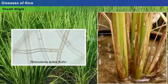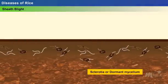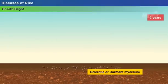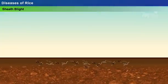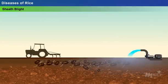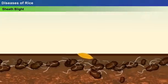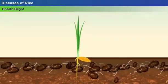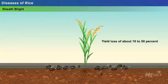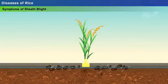Sheath blight is caused by the fungus Rhizoctonia solani. This fungus is capable of surviving in the soil as sclerotia or dormant mycelium during unfavourable conditions for even 2 years. Later, the sclerotia in the soil are activated during land preparation or upon frequent irrigation of land. Under favourable conditions, the hyphae or sclerotia attach to the seedling and begin to germinate. The sheath blight disease may cause a significant yield loss of about 10–50%.